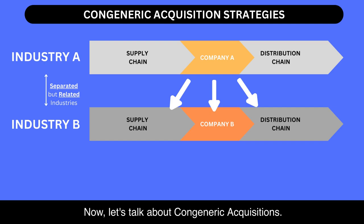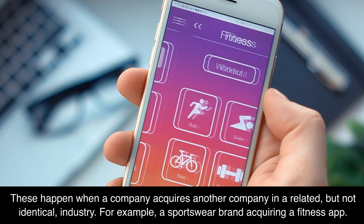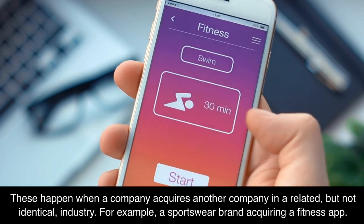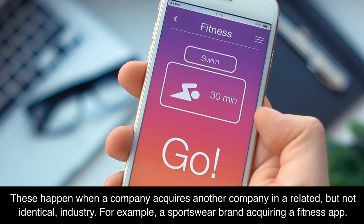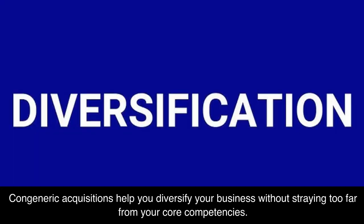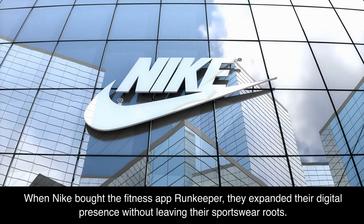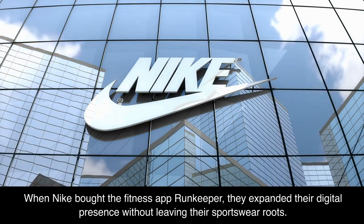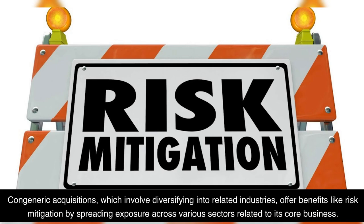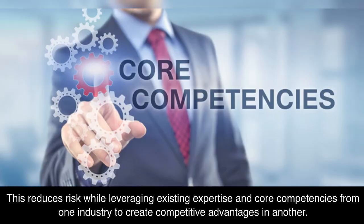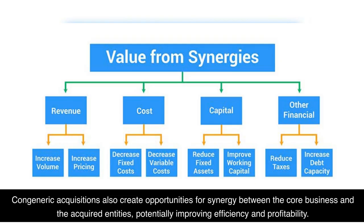Now let's talk about congeneric acquisitions. These happen when a company acquires another company in a related but not identical industry — for example, a sportswear brand acquiring a fitness app. Congeneric acquisitions help you diversify your business without straying too far from your core competencies. When Nike bought the fitness app RunKeeper, they expanded their digital presence without leaving their sportswear roots. These acquisitions offer benefits like risk mitigation by spreading exposure across related sectors, while leveraging existing expertise and core competencies to create competitive advantages in a new field.